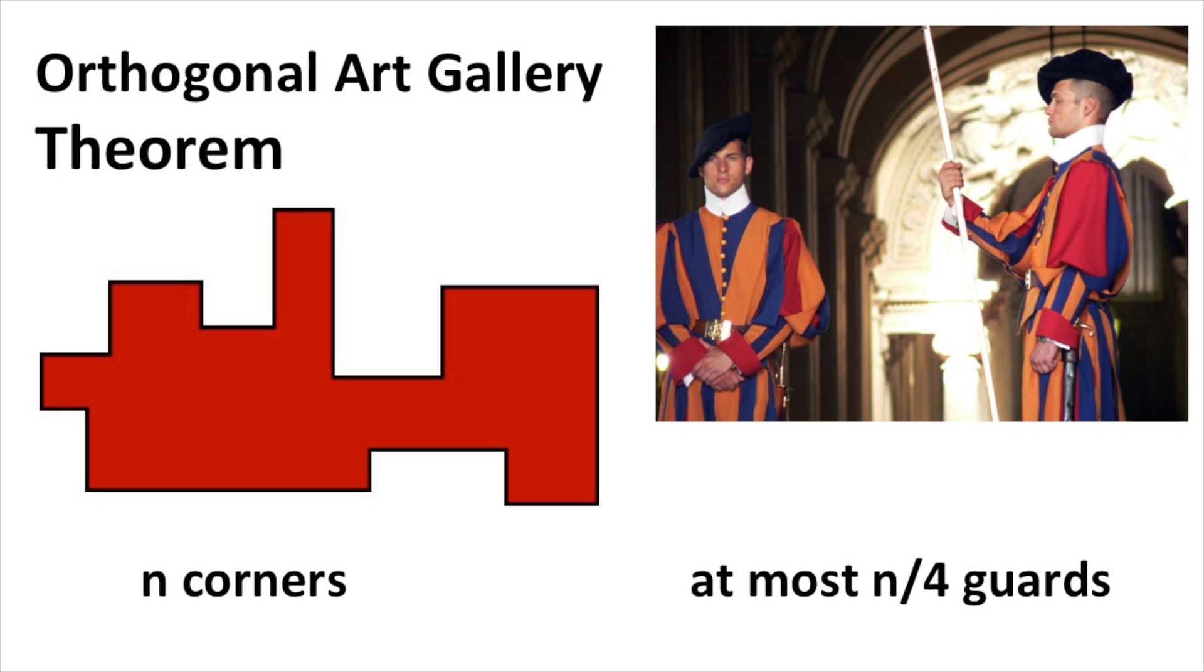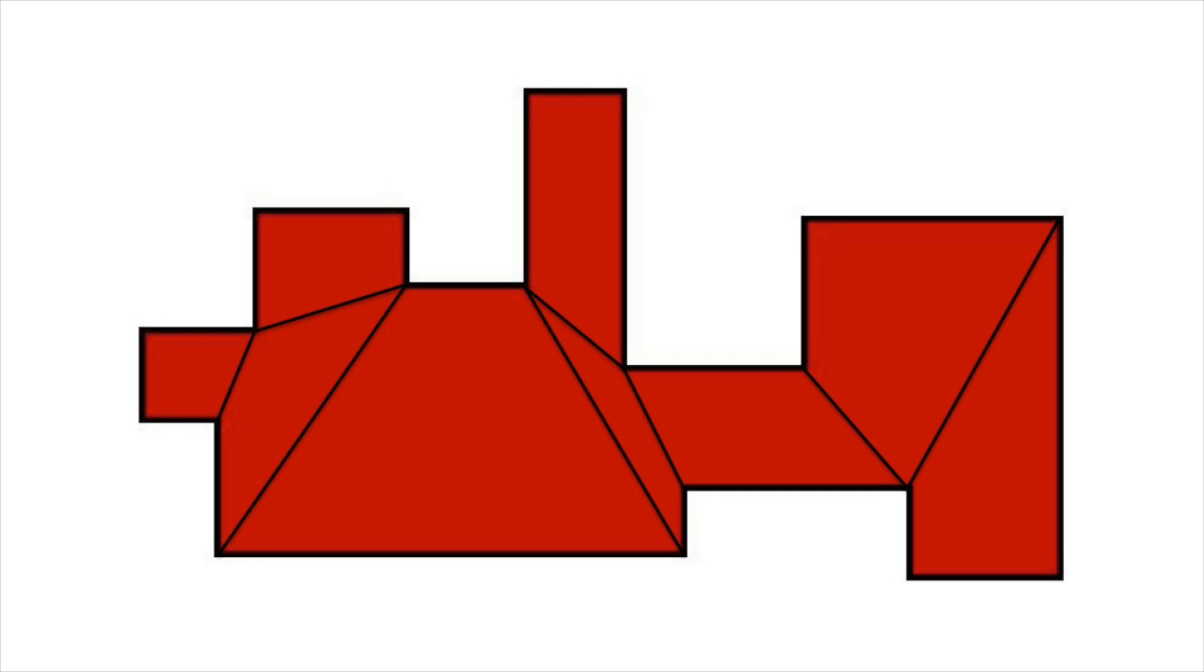This proof is similar to before, but instead of dissecting the gallery into triangles, we dissect it into convex quadrilaterals. The corners can then be colored with four colors such that each quadrilateral uses each color exactly once. The same logic as before applies to complete the proof.